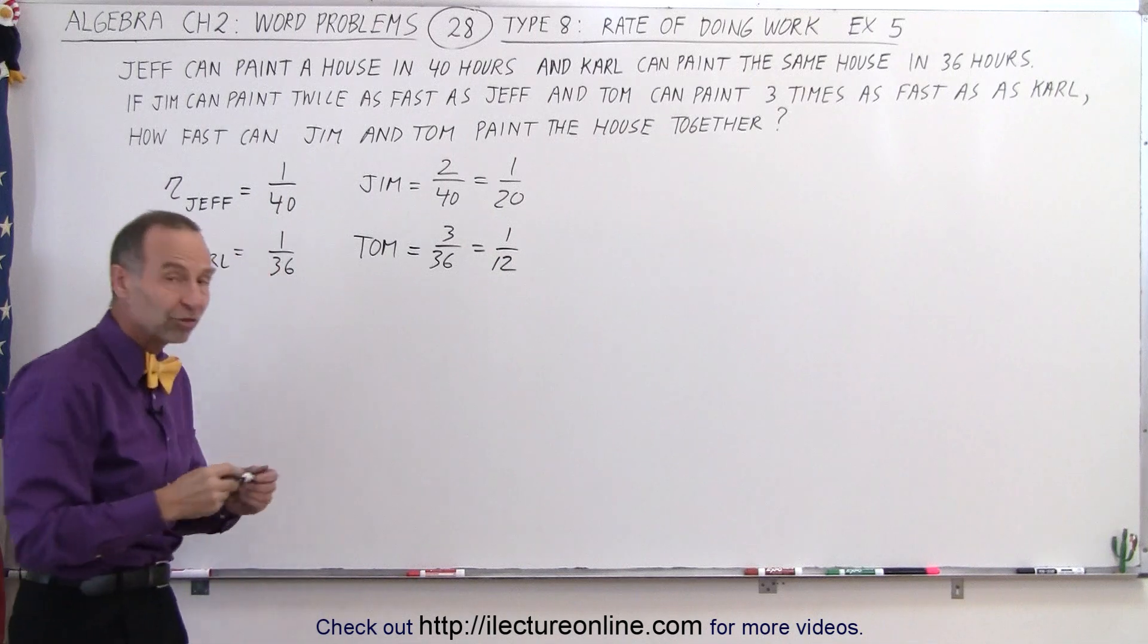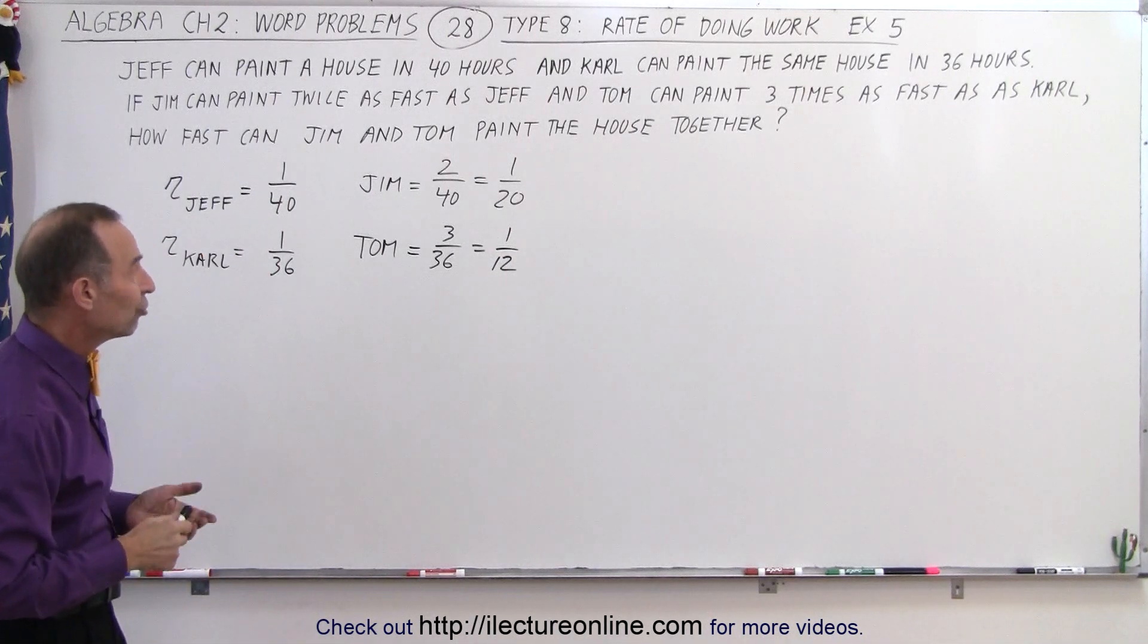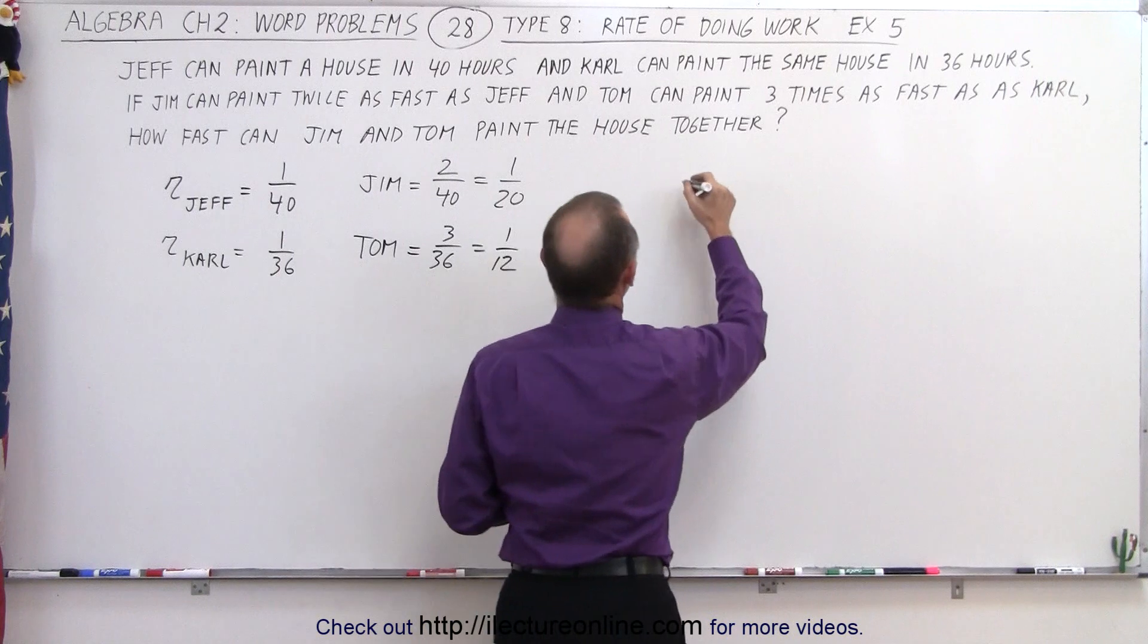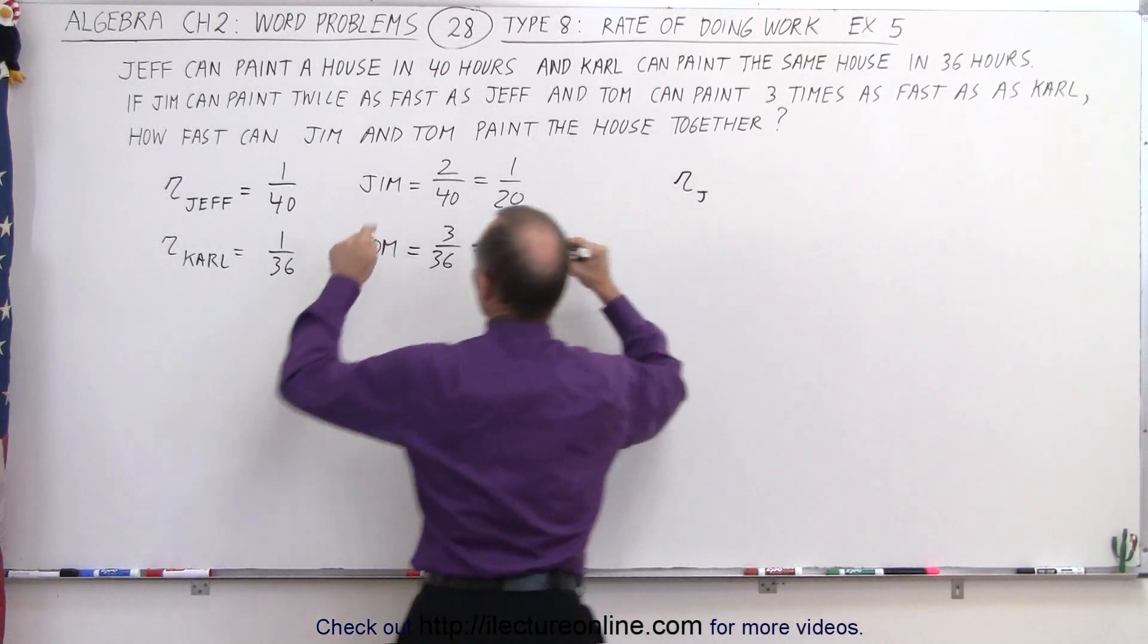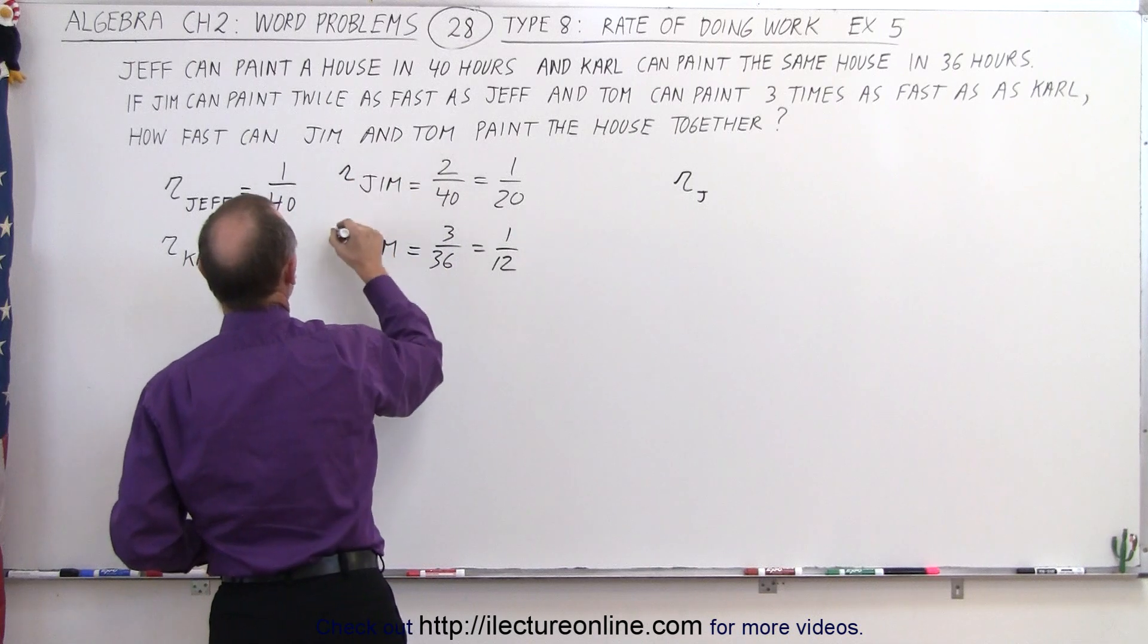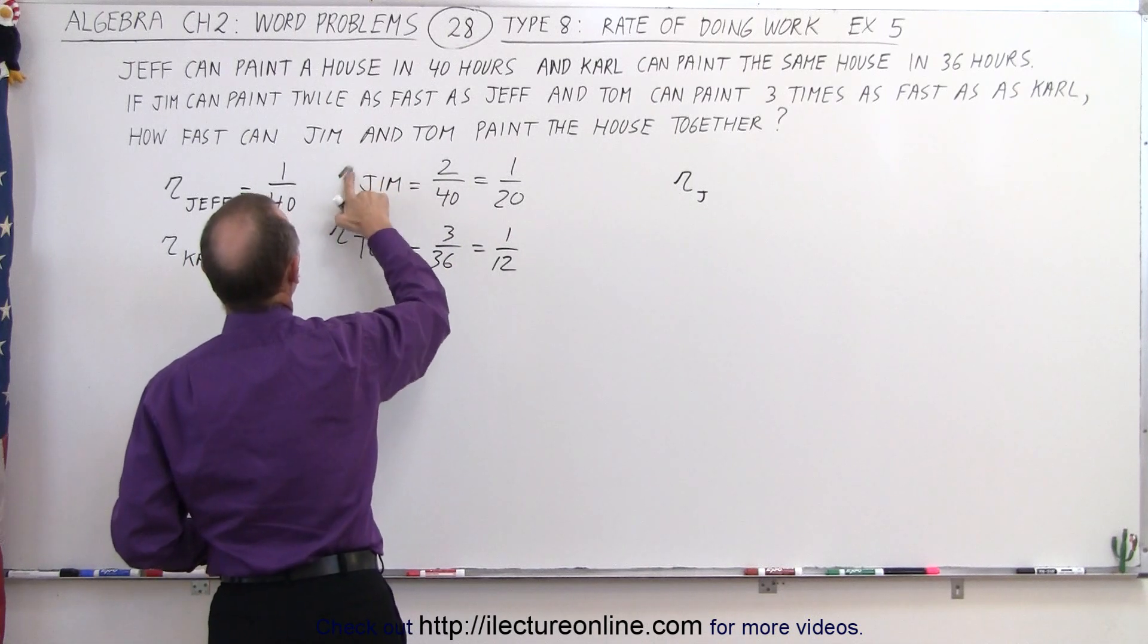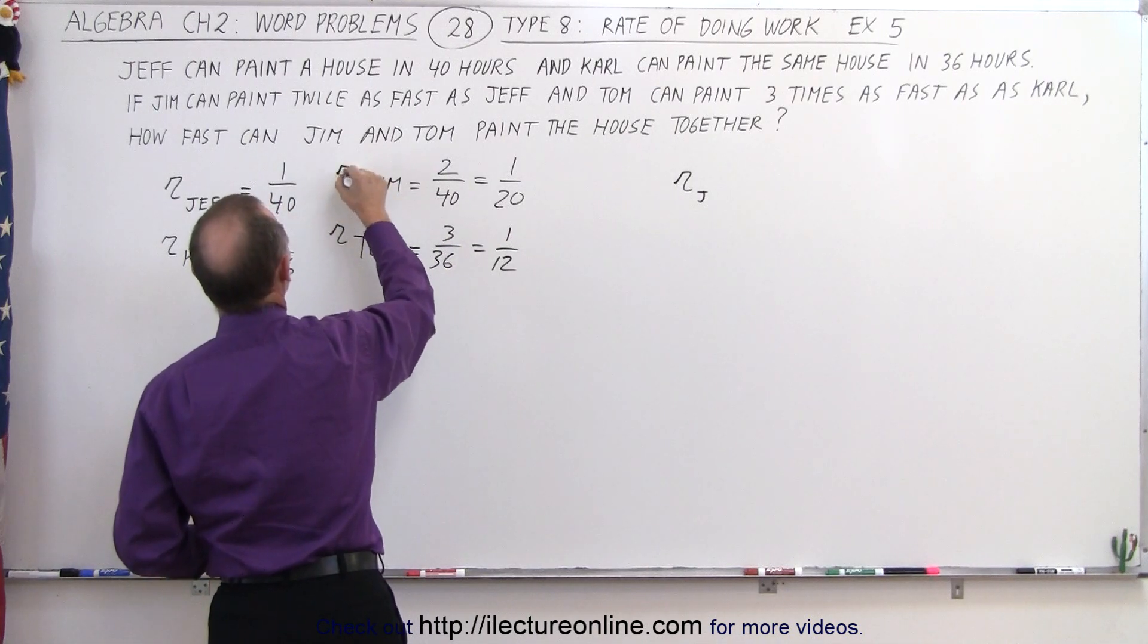So now we've established the rates for Jim and Tom, and now we can solve the problem because we can say that the rate of Jim, and actually I should have said rate of Jim and rate of Tom. I'm trying to make this look like an R. There we go.